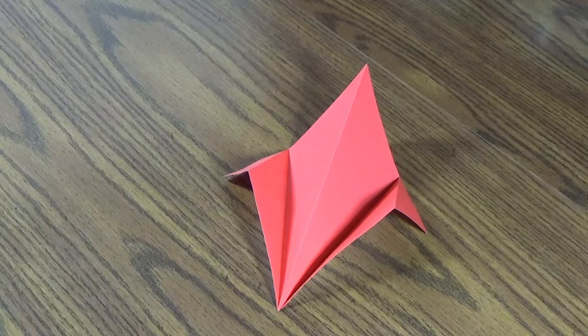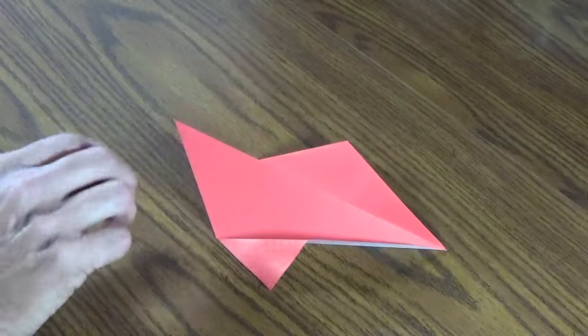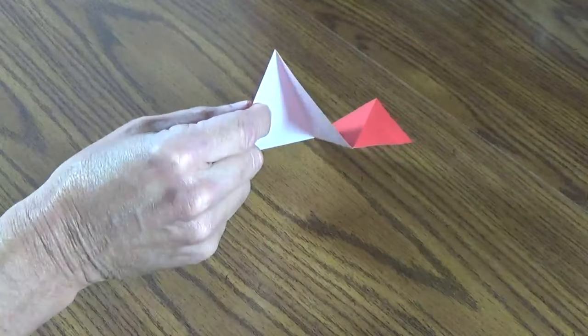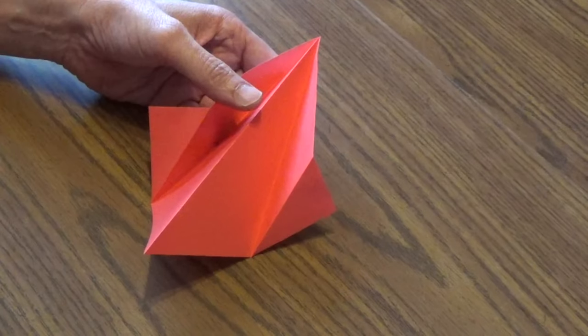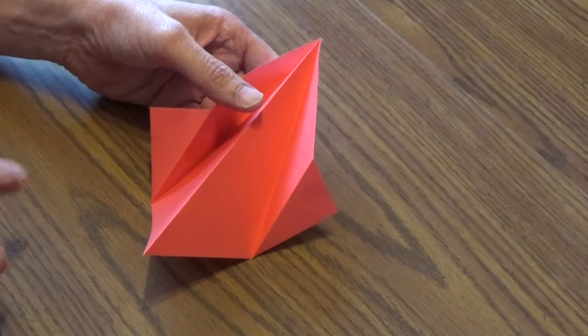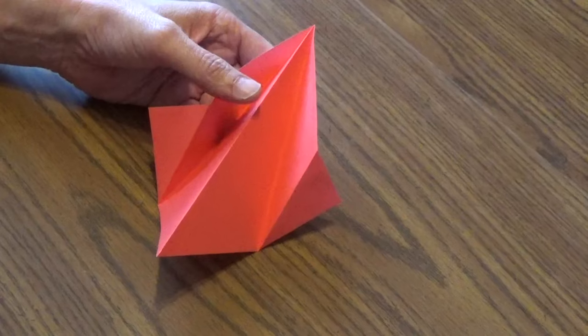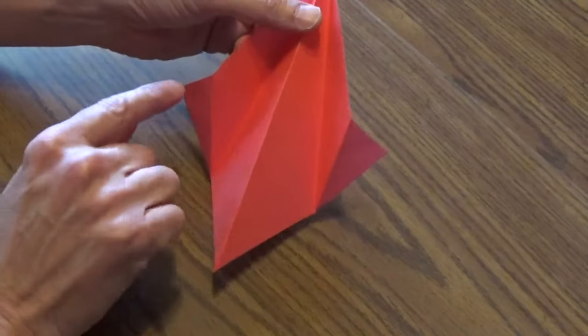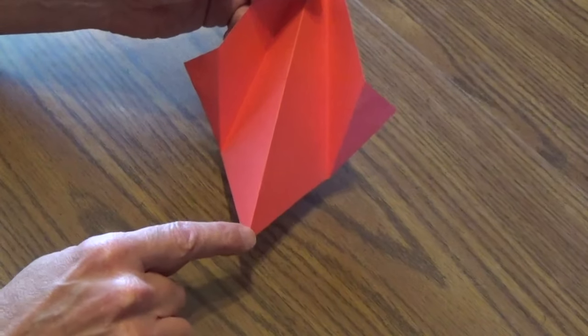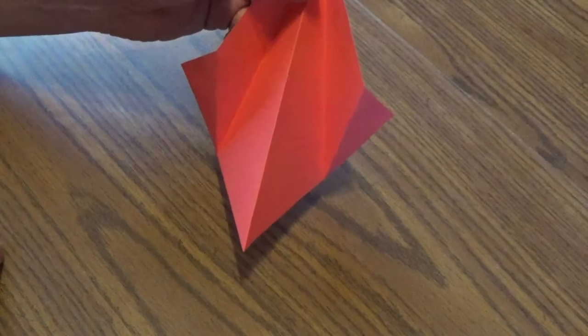So you can see now it's kind of three-dimensional. It's standing up off the table and it's got the peak to it and the height to it. Now we need to make some holes for the string for the kite and the tail. And we're going to make those holes here, here, and down at the bottom. And this is where the tail goes.